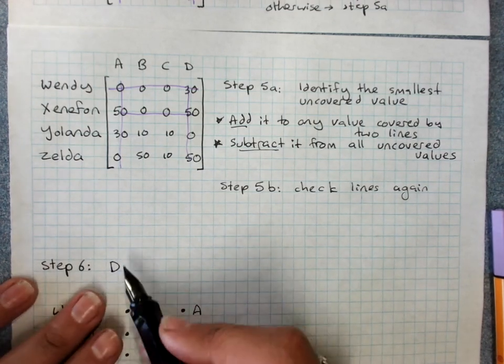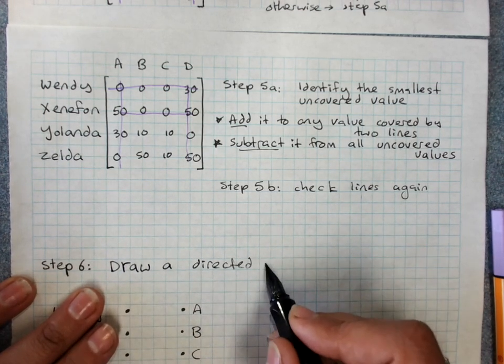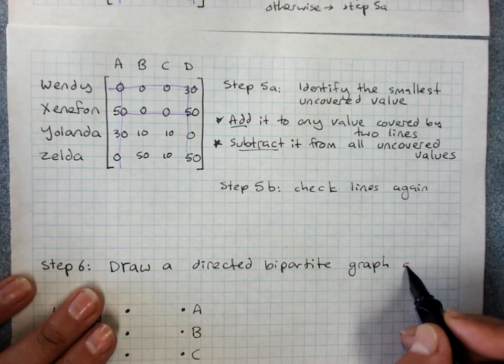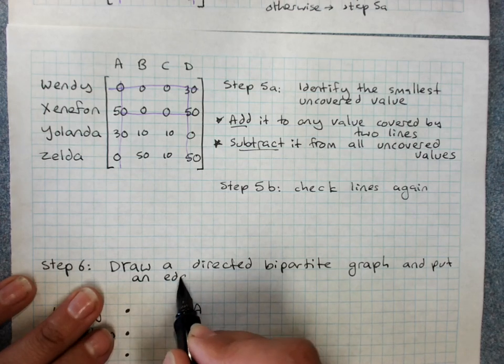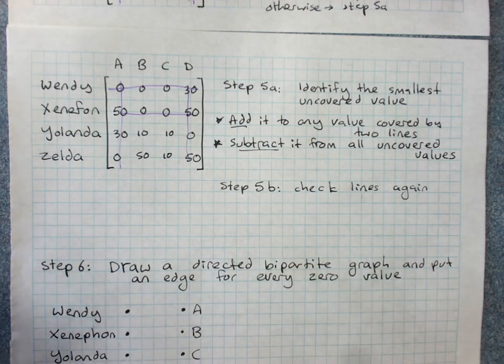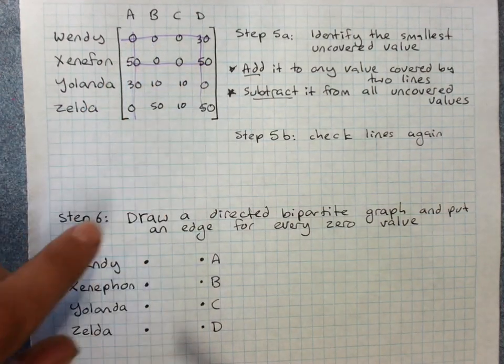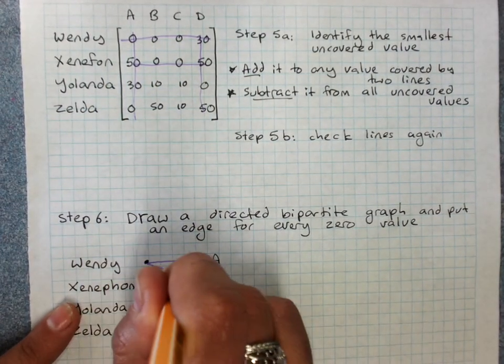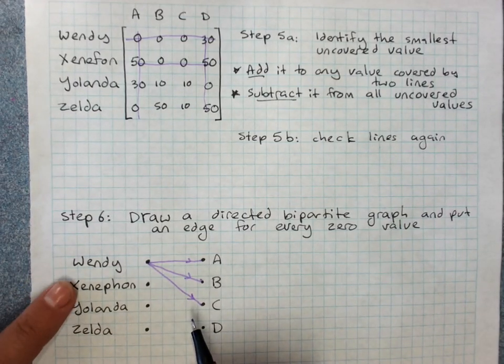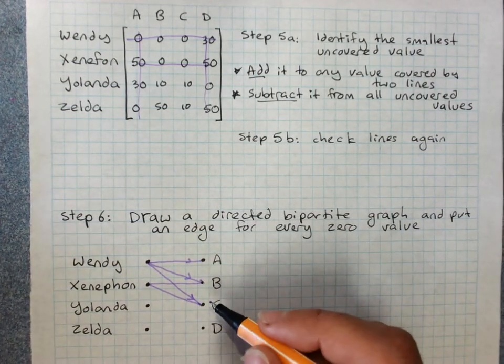Draw a, technically it should be a directed bipartite graph. Directed bipartite graph. And you're going to put an edge for every zero. So, there we go. Wendy has a zero to A, B and C. So Wendy can do A or B or C. The little arrow makes it directed. I don't actually think it's needed to be honest. Xenophon can do B or C. So I'm leaving the arrows out because it makes it cleaner to me.